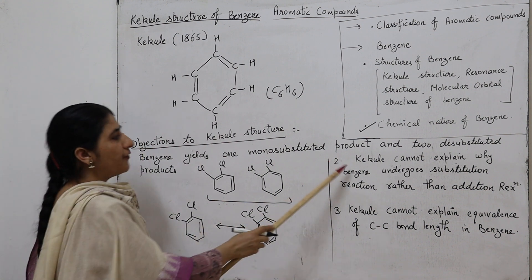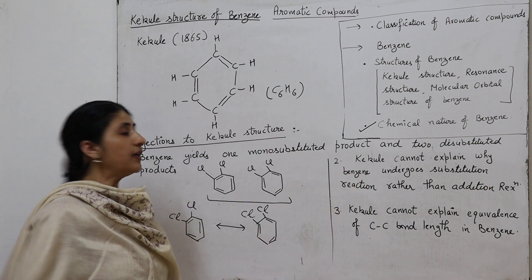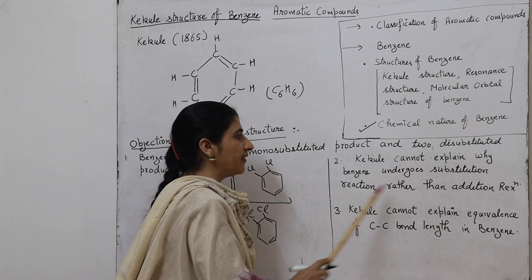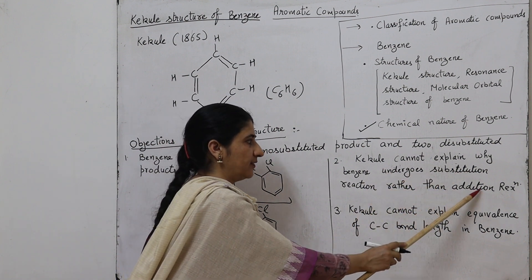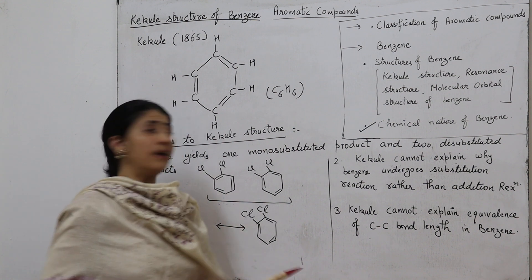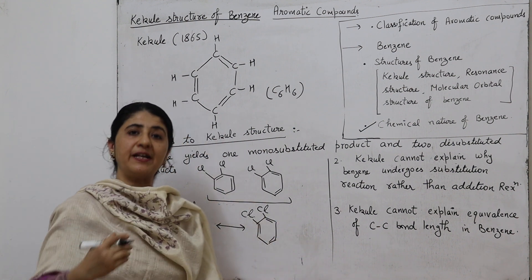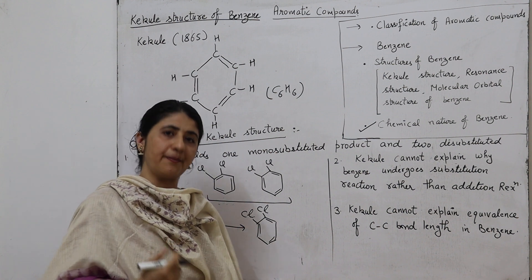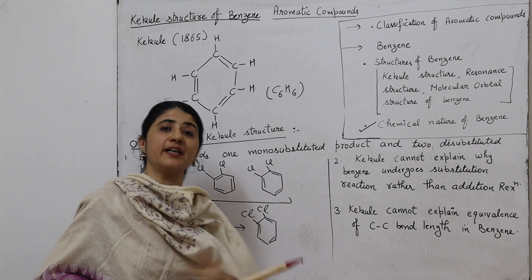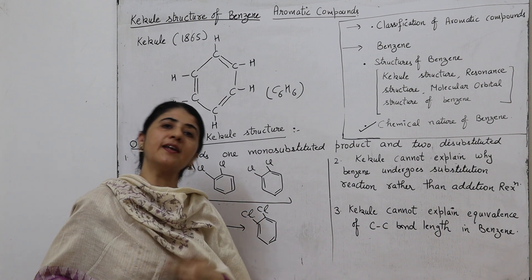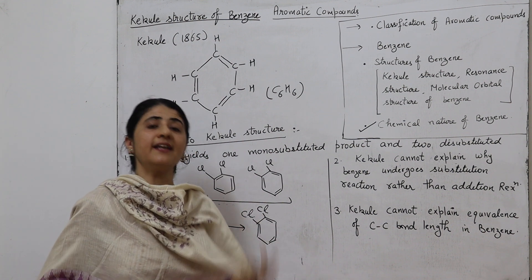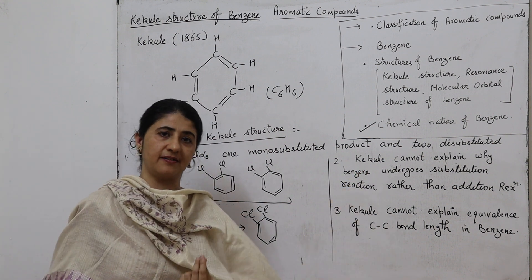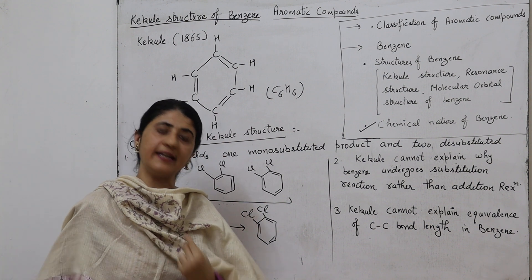The second objection of the Kekulé structure is that Kekulé cannot explain why benzene undergoes substitution reactions rather than addition reactions. As discussed earlier, benzene does not react with bromine or KMnO4 — benzene shows stability toward oxidizing agents. In other words, Kekulé cannot explain the stability of benzene toward oxidizing agents.